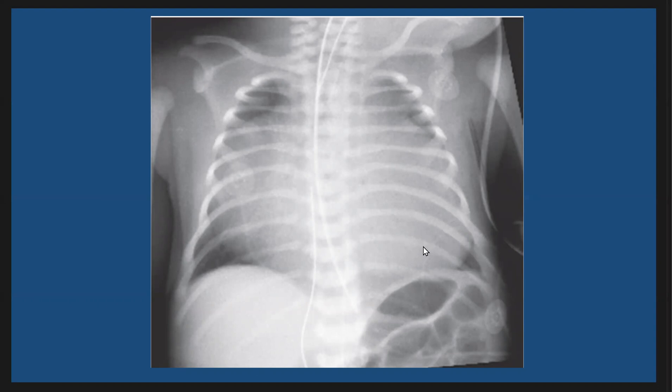What are the differential diagnoses? The differential diagnosis includes Ebstein anomaly. In Ebstein anomaly, we have massive cardiomegaly and the heart looks like a box-like appearance with convexity of the right border of the heart and decreased pulmonary vascularity.